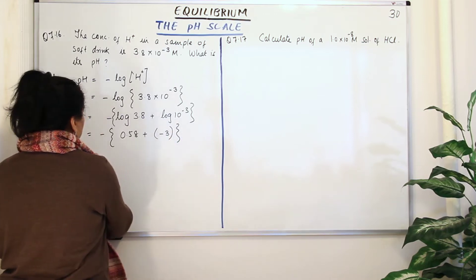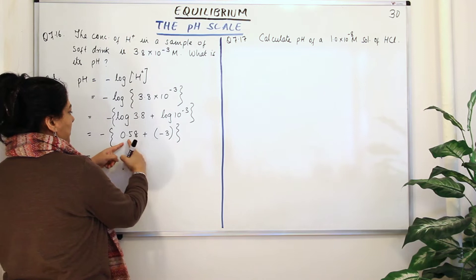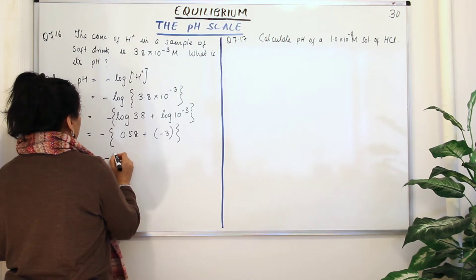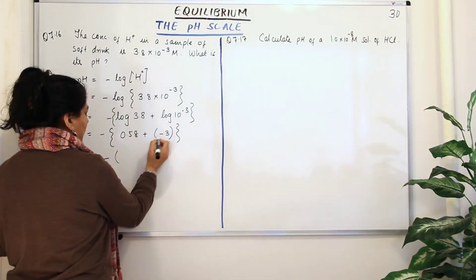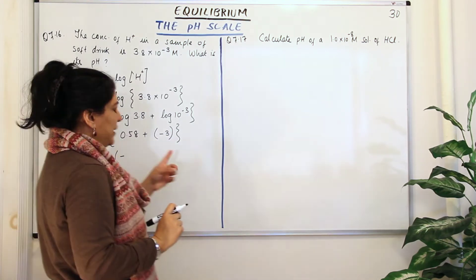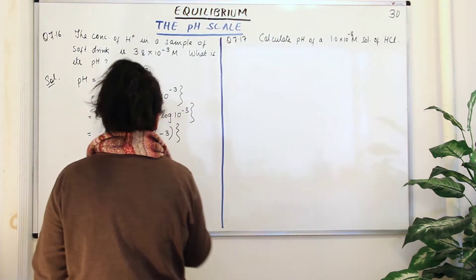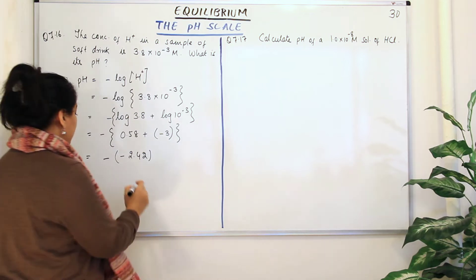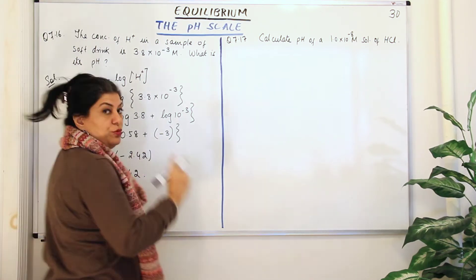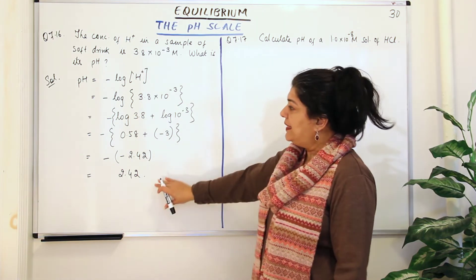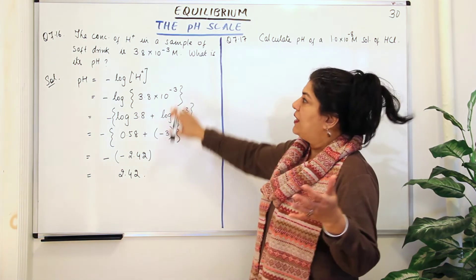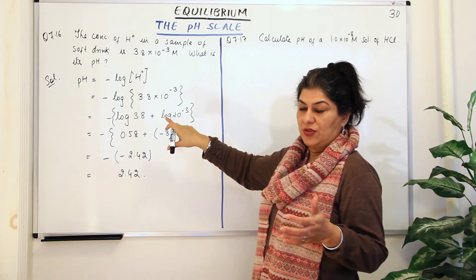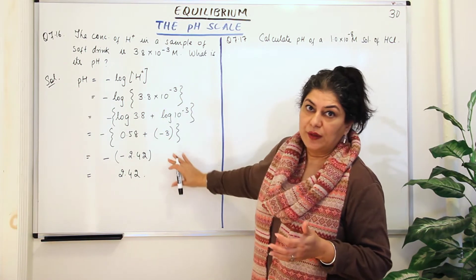This is equal to −(−3 + 0.58), which is −(−2.42). The minus signs cancel, giving us pH = 2.42. So what did we do? We were given the hydrogen ion concentration, we found the negative log of that concentration, and the rest was just mathematically solving the problem.